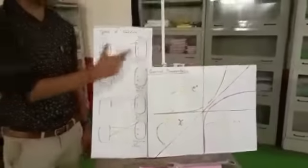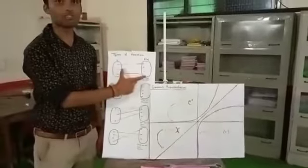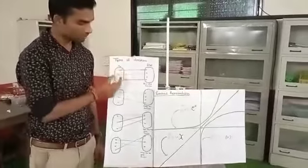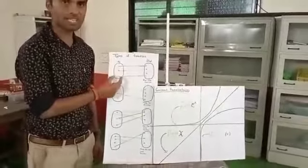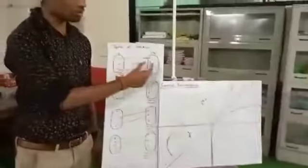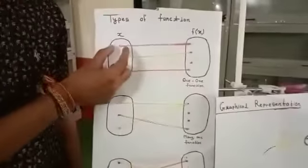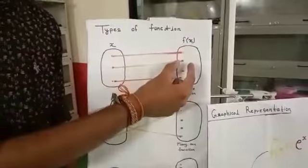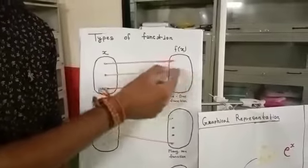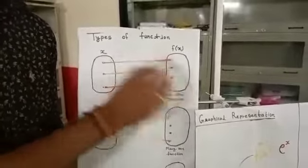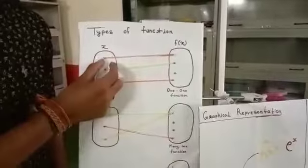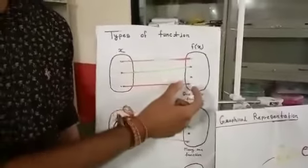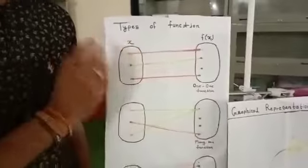Now we will discuss what happens with the 1-1 function. The 1-1 function means this is set A and set B. Set A will show exactly one image in the co-domain. It is the pair of 1-1, so we have called it a 1-1 function.